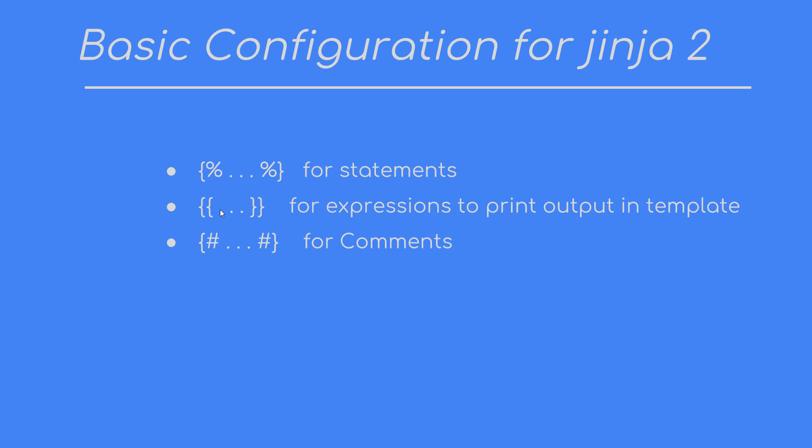The double curly braces `{{ }}` are used for printing output in the template. For example, when you pass data from a view to a template, we use these double curly braces to access those values. And the double curly braces with a hash sign between them `{# #}` is used for comments.